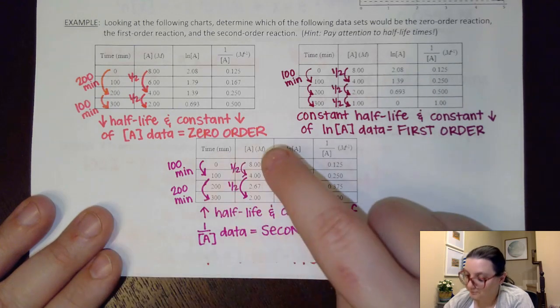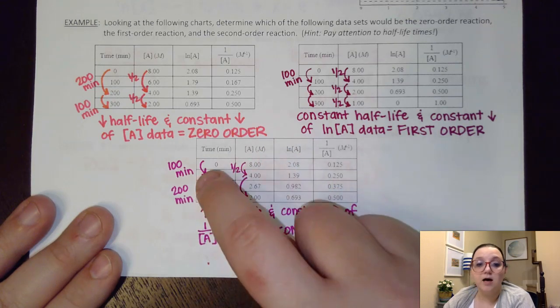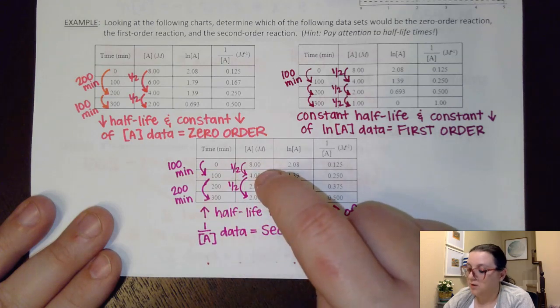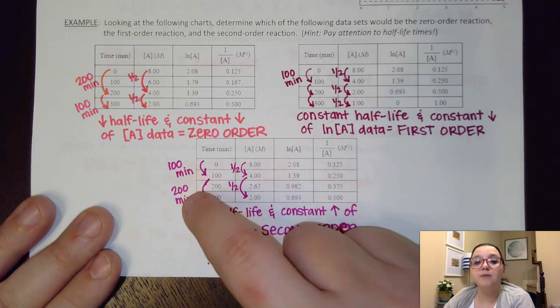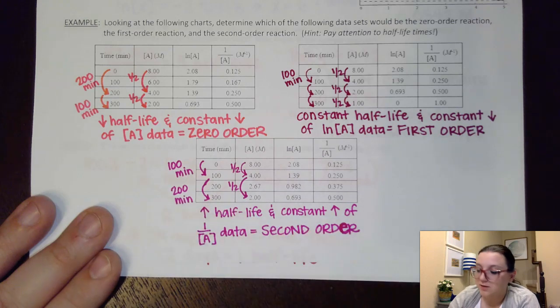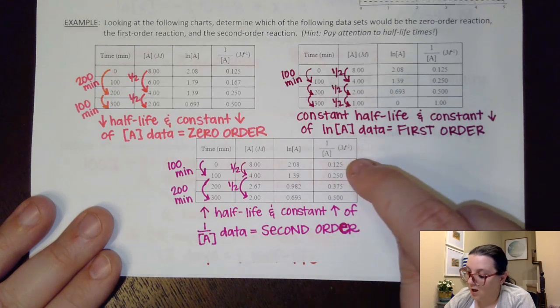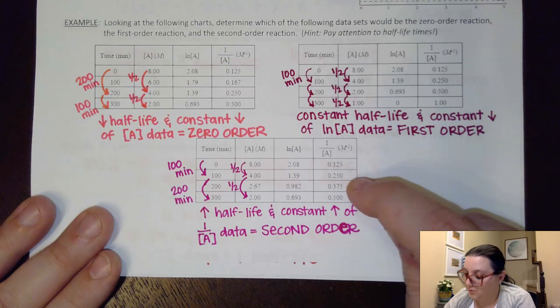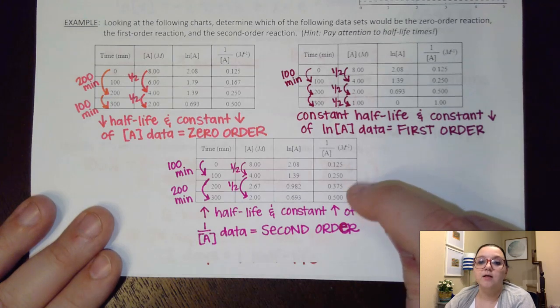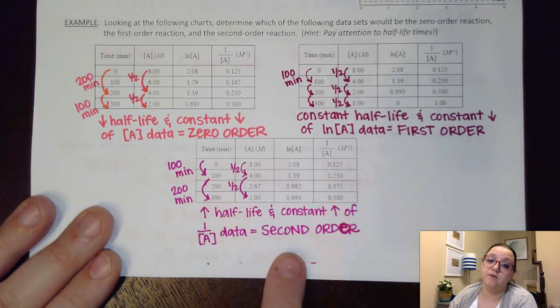Last but not least down here on this one, I have my concentration of 8 going and halving to 4. That's taking 100 minutes. However, halving 4, I would go to 2. That halving took 200 minutes. My half-life time is getting bigger. Also, look at the 1 over A data here. Going from 0.125 up to 0.25, that's a constant change in comparison to 0.25 up to 0.375. I'm changing by the same interval from 0.375 up to 0.5. I'm changing by the same interval. That's a constant increase there. And so, therefore, both of these factors would be indicative of being second-order.